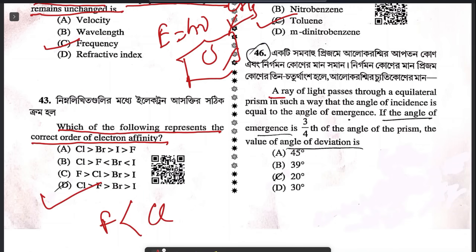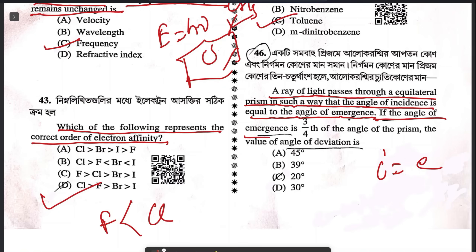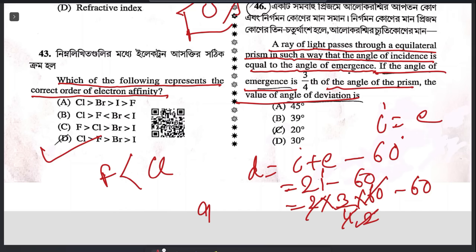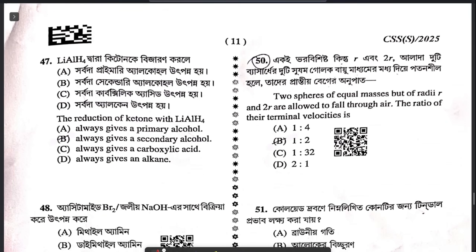Question 45: the rate of aromatic electrophilic substitution reaction is highest in which compound? Toluene. Question 46: a ray of light passes through an equilateral prism such that angle of incidence equals angle of emergence. The angle of emergence is 3/4 of the angle of prism. Deviation = I + E - 60° = 2I - 60° = 2 × (3/4 × 60°) - 60° = 90° - 60° = 30°. The only possible answer is D.